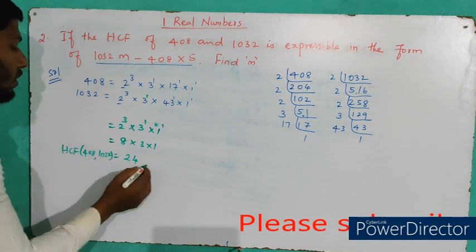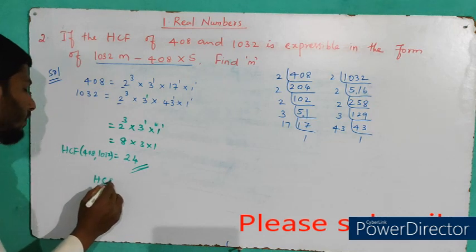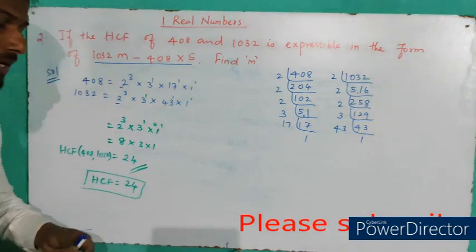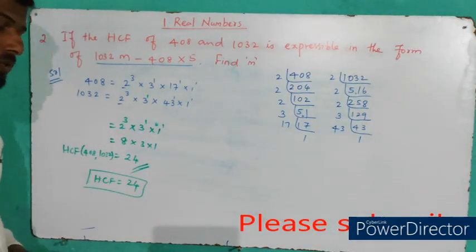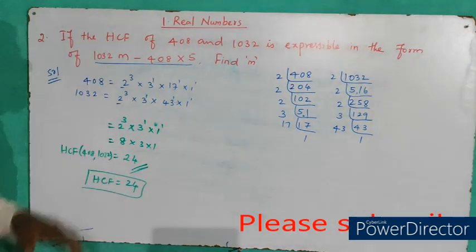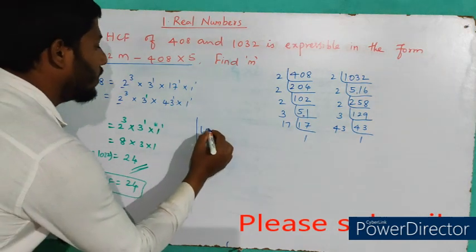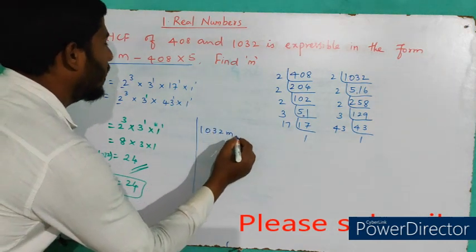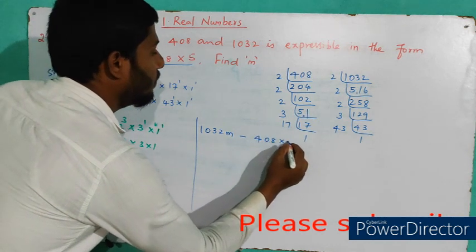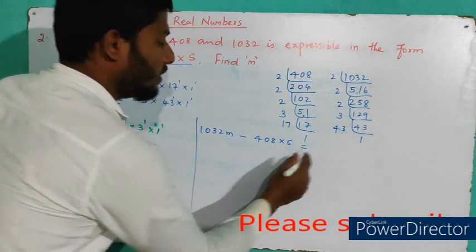So the HCF of 408 and 1032 is 24. We found this by the prime factorization method. Now, the question has given the HCF in the format: 1032 × m − 408 × 5.